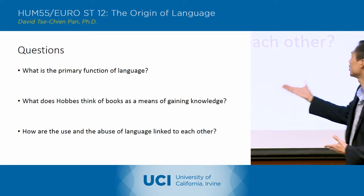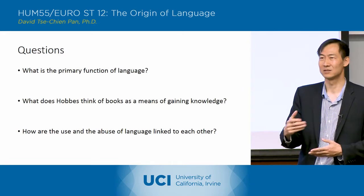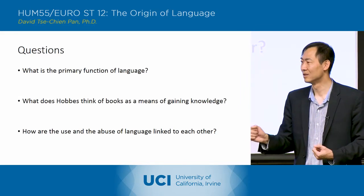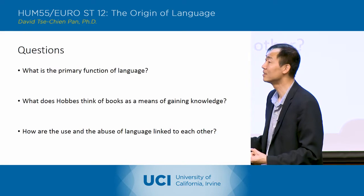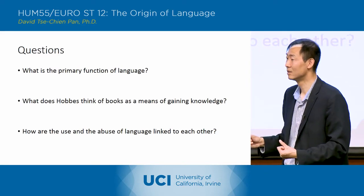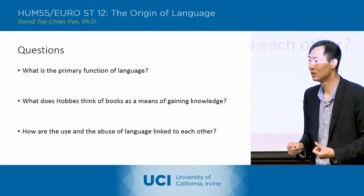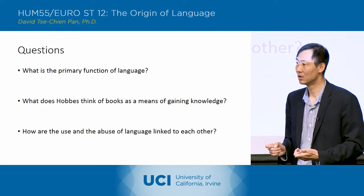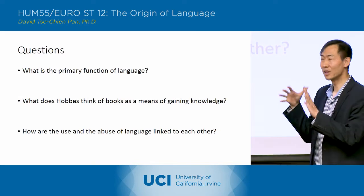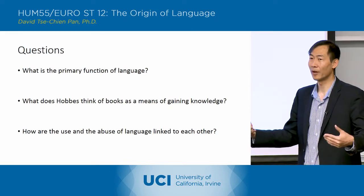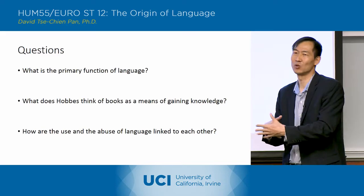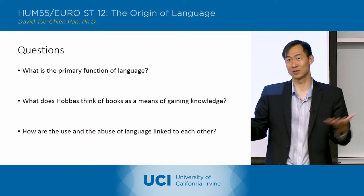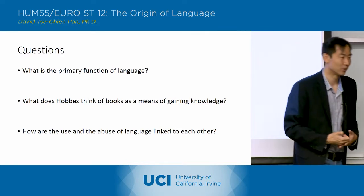And how are the use and abuse of language linked to each other? A false connection could be made using words — you'd be able to lie, or make an error. So language allows you to make connections, but once language makes connections, you suddenly have the possibility of both true connections and false connections. The use is the connections; the abuse is the creation of false connections.